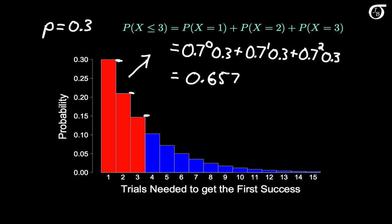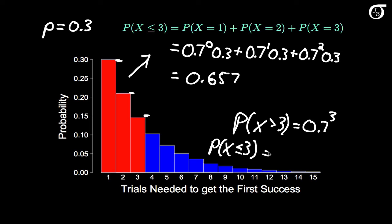Let's develop the cumulative distribution function for the geometric distribution using some logic and basic probability rules. The probability that X is greater than 3 is simply the probability of getting 3 failures in a row, which is 0.7³. This is based on basic probability rules and logic: if the first three trials are all failures, then X must take a value greater than 3. The event that X is less than or equal to 3 is the complement, so P(X ≤ 3) = 1 - 0.7³, which works out to 0.657 — the same answer.